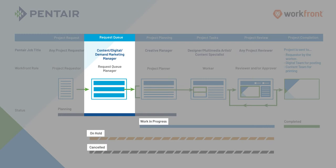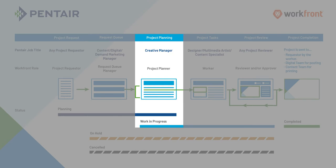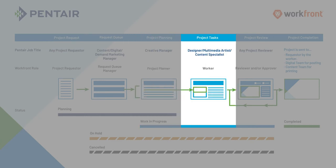Once the request queue manager has approved the project, it goes to a project planner. Sometimes this individual is the same person. The project planner will set a specific amount of tasks in a project that will need to go to workers. Workers can be content writers, someone from the digital team, or a creative.